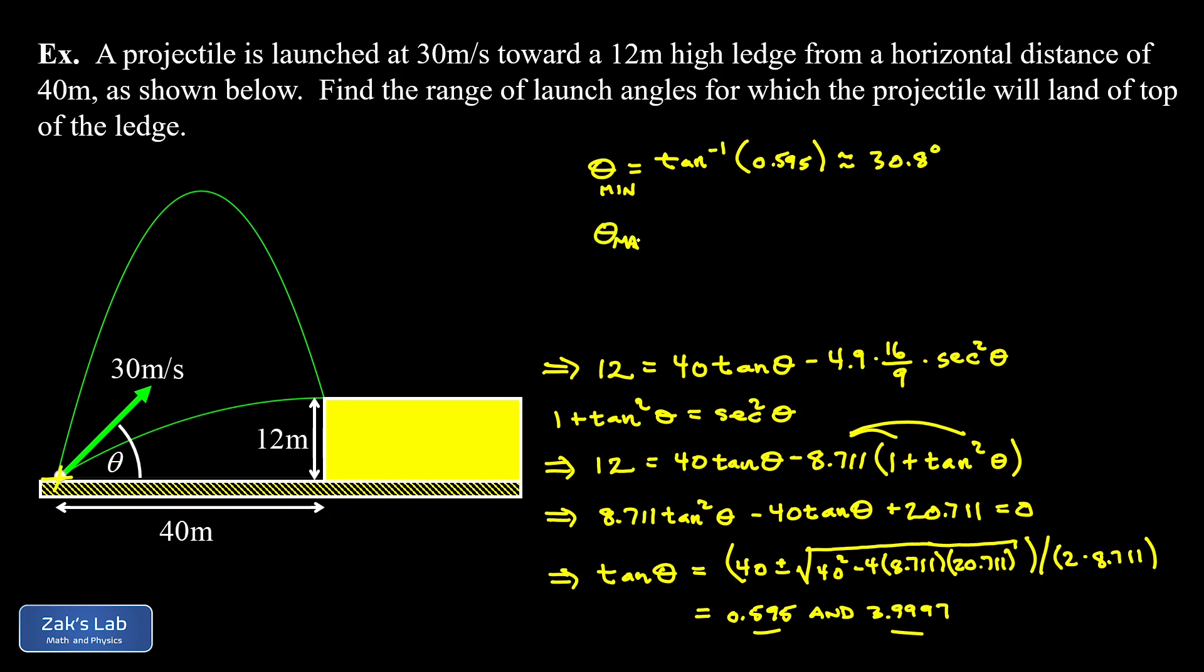Now the maximum angle for which we land on top of the ledge, that's the angle whose tangent is 3.997. I just noticed at the bottom of the screen here, I put an extra nine in there, not going to make a big difference. But anyway, it was 3.997. And when we approximate this angle to three significant digits, we get 76.0 degrees.